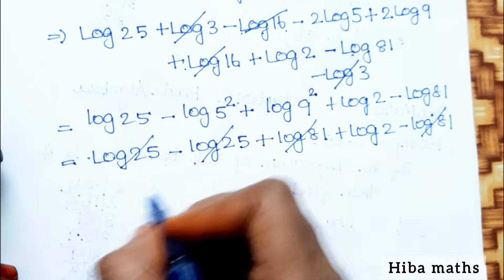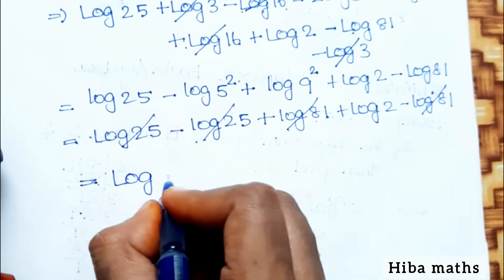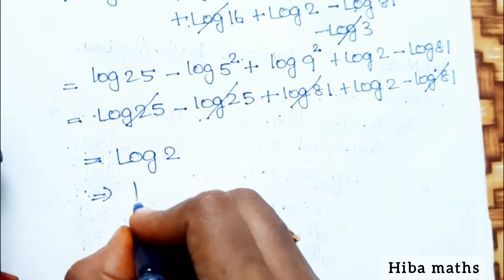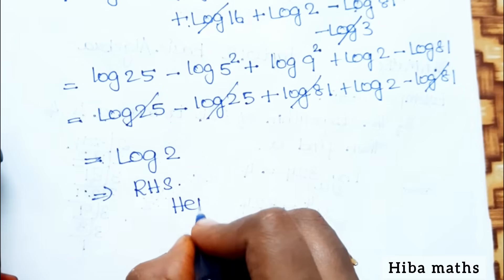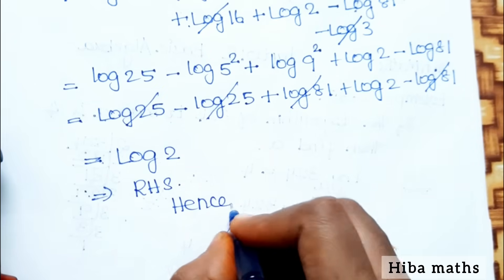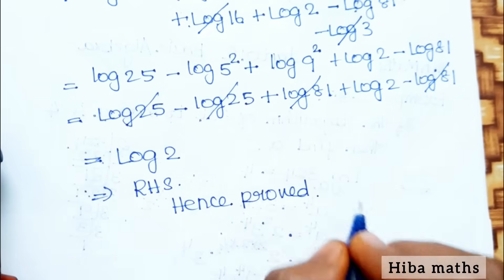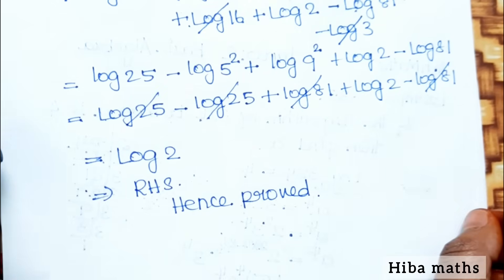The remaining balance is log 2, which equals RHS. Hence proved. It's very easy, but we have to work through it step by step to get the cancellations. Thank you so much for watching.